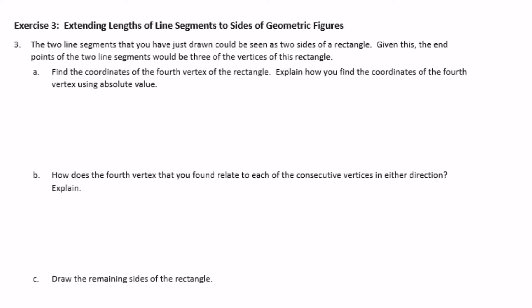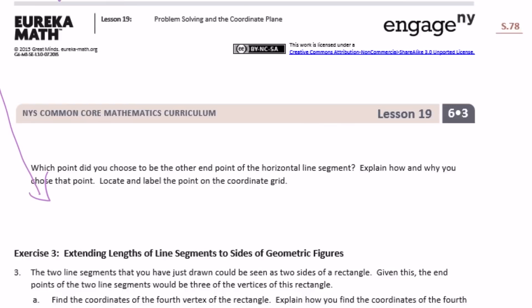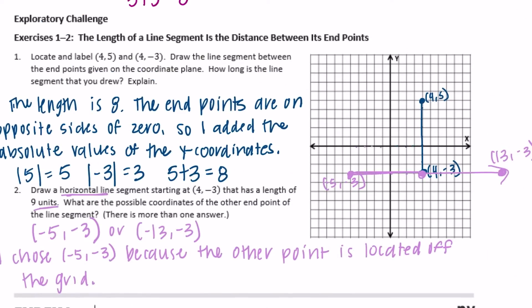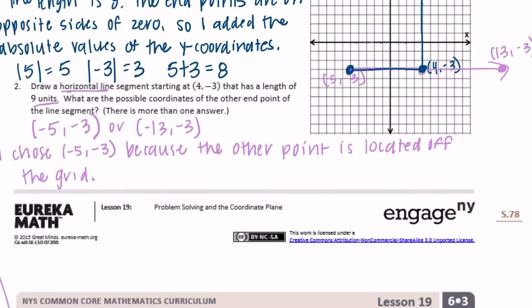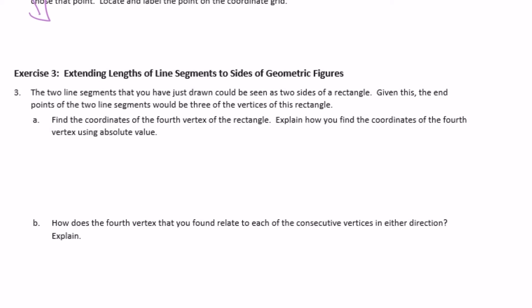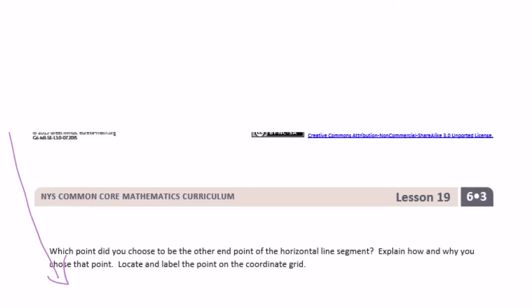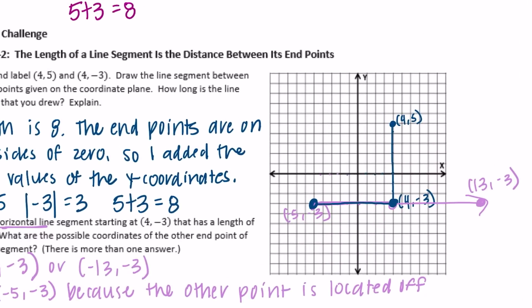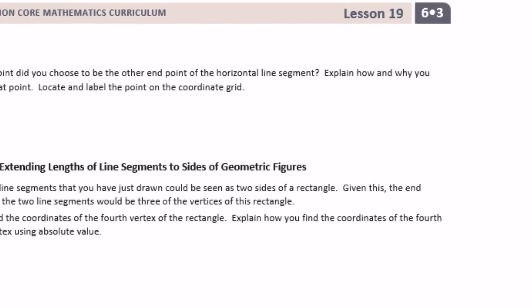Exercise 3: extending lengths of line segments to sides of geometric figures. The two line segments just drawn could be seen as two sides of a rectangle. So these are two sides of a rectangle here. The endpoints of the two segments would be three vertices of the rectangle, so we're missing one vertex to complete the rectangle.